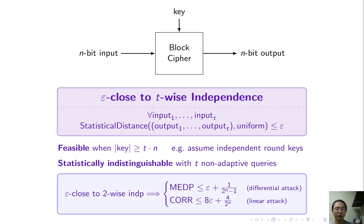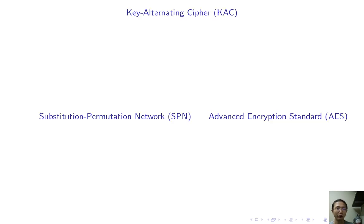Quantitatively, we show a tight relation between the closeness to 2-wise independence and resistance to linear and differential attacks. Now, I'm going to give a brief overview on the cipher design KAC and SPN and the concrete cipher AES. I guess they are familiar to most audience.